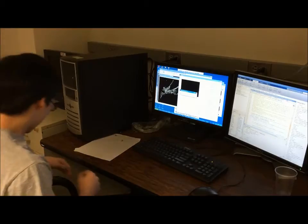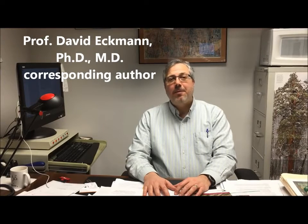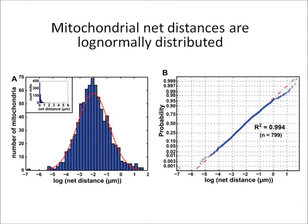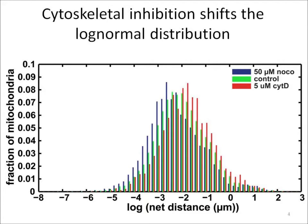We also give new labels to mitochondria resulting from fusion or fission. Our results show that the net distances traveled by mitochondria in a given cell or group of identically treated cells are log-normally distributed. Given this whole-cell metric for measuring mitochondrial motility, we were interested in comparing normal and altered motility. In particular, we used nocodazole to depolymerize microtubules or cytochalasin D to depolymerize microfilaments. We found that microtubule depolymerization shifted the entire log-normal distribution to the left, indicating shorter net distances traveled.